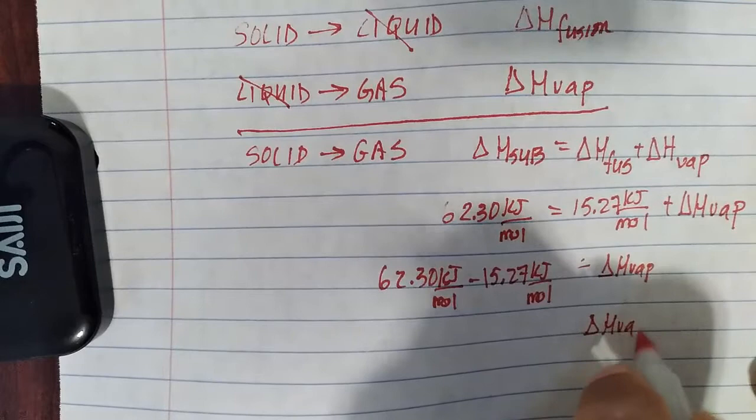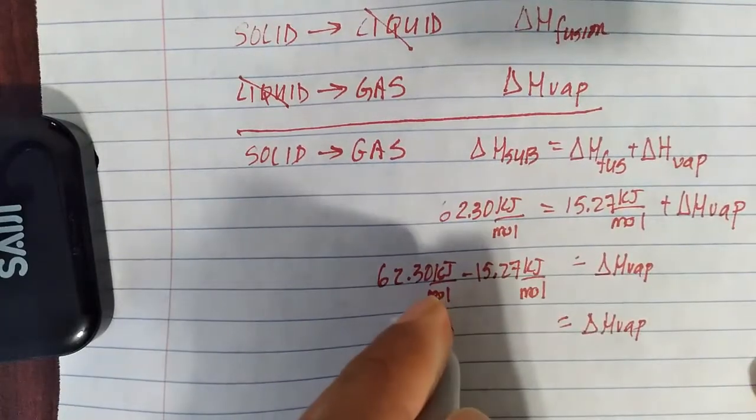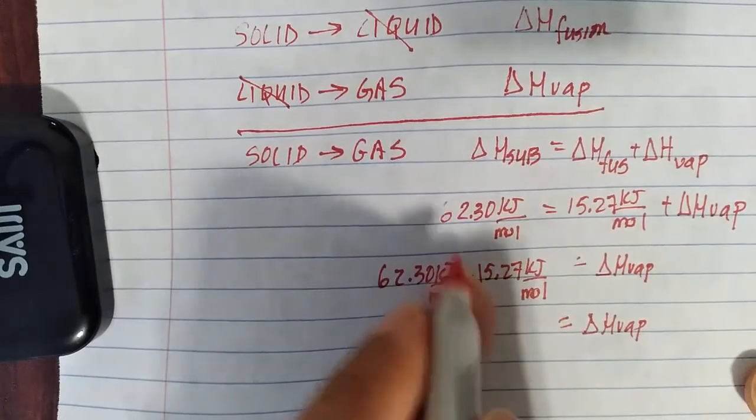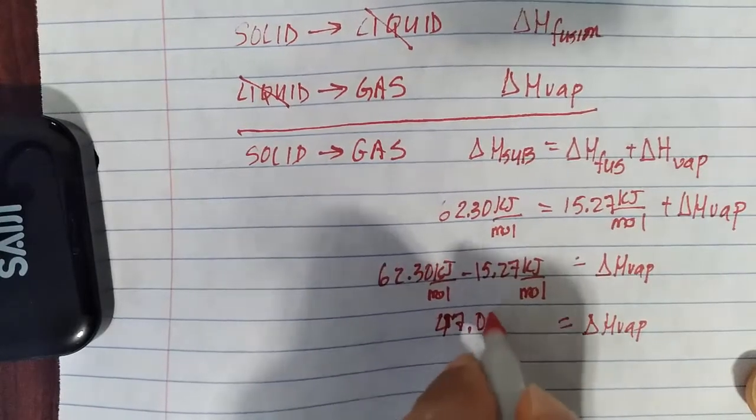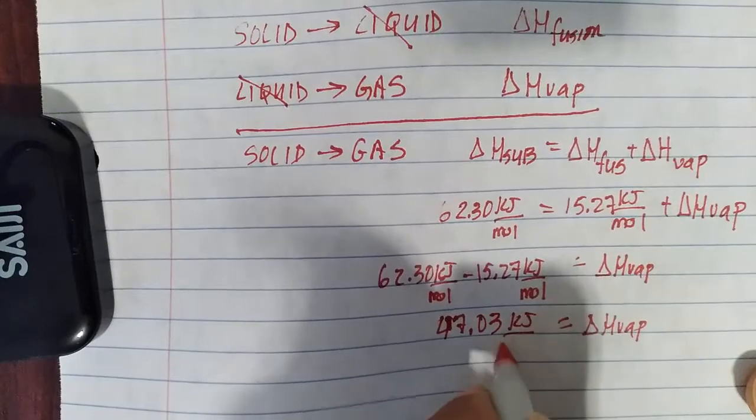And I'm getting, as an answer to this problem, the delta H of vaporization for molecular iodine is going to be this minus that. On my calculator, I'm getting about 47.03 kilojoules per mole.